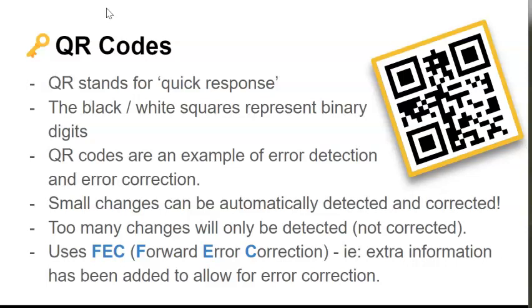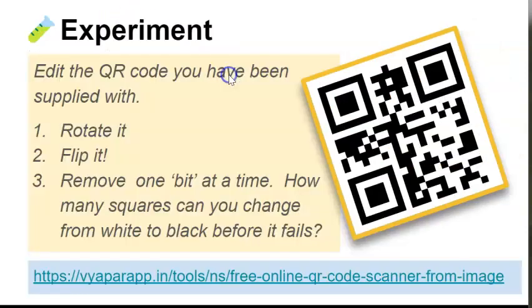QR codes use something called FEC, or Forward Error Control. This is where we add extra information to our QR code so that the errors can be corrected.